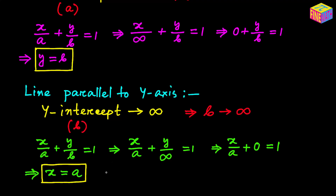Simply by looking at the equation you can tell whether a line is parallel to any axis. If you see an equation of the form y equals something, that line is parallel to the x-axis. If you see an equation of the form x equals something, that straight line is parallel to the y-axis.